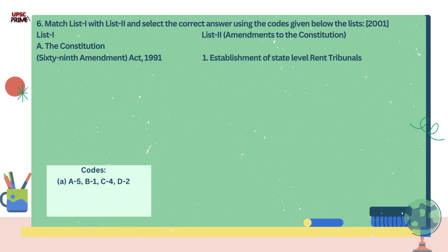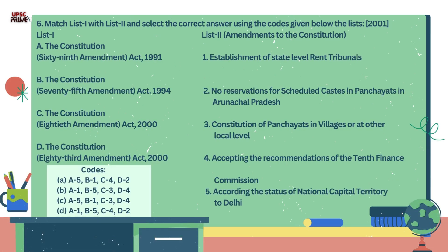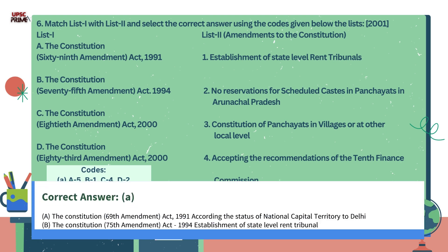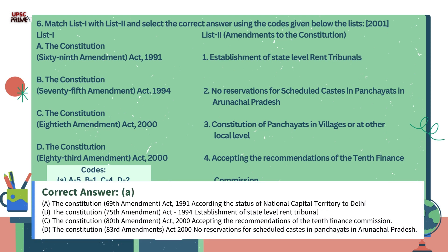Question number 6. Match List 1 with List 2 and select the correct answer using the codes given below. A. The Constitution 69th Amendment Act. B. The Constitution 75th Amendment Act. C. The Constitution 88th Amendment Act. D. The Constitution 83rd Amendment Act. The correct answer is Option A. The Constitution 69th Amendment Act talks about the status of National Capital Territory to Delhi. The Constitution 75th Amendment Act talks about establishment of state-level rent tribunals. The Constitution 88th Amendment Act talks about recommendations of the 10th Finance Commission. The Constitution 83rd Amendment Act talks about no reservation for Scheduled Castes in Panchayats in Arunachal Pradesh.